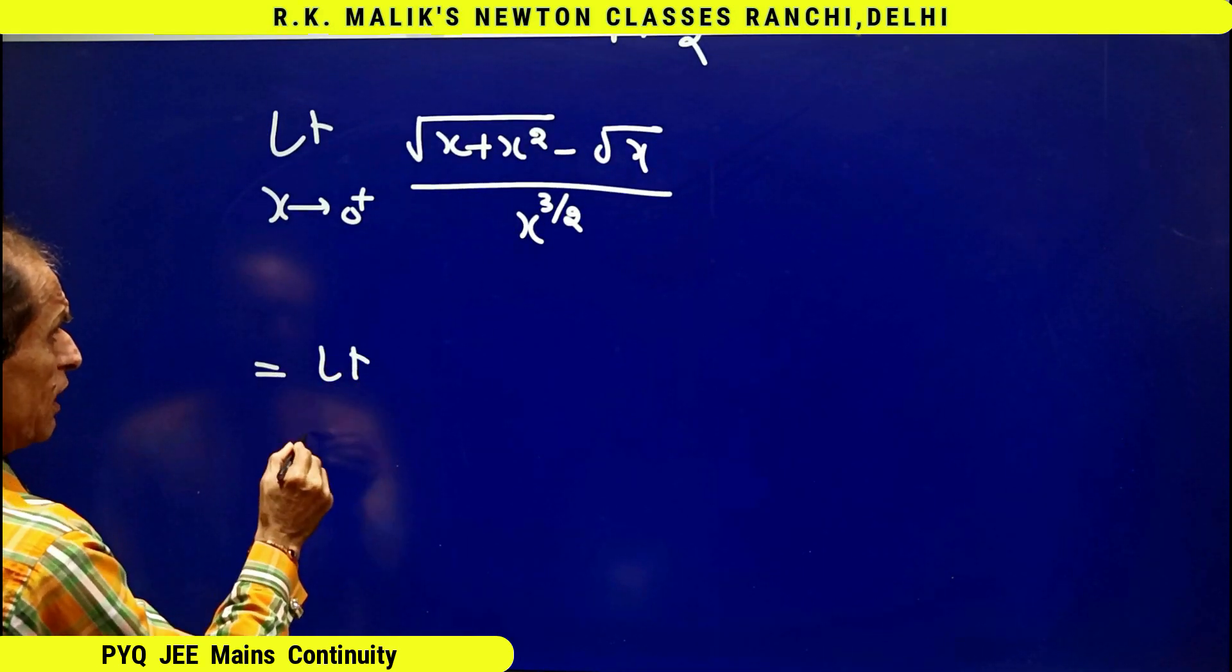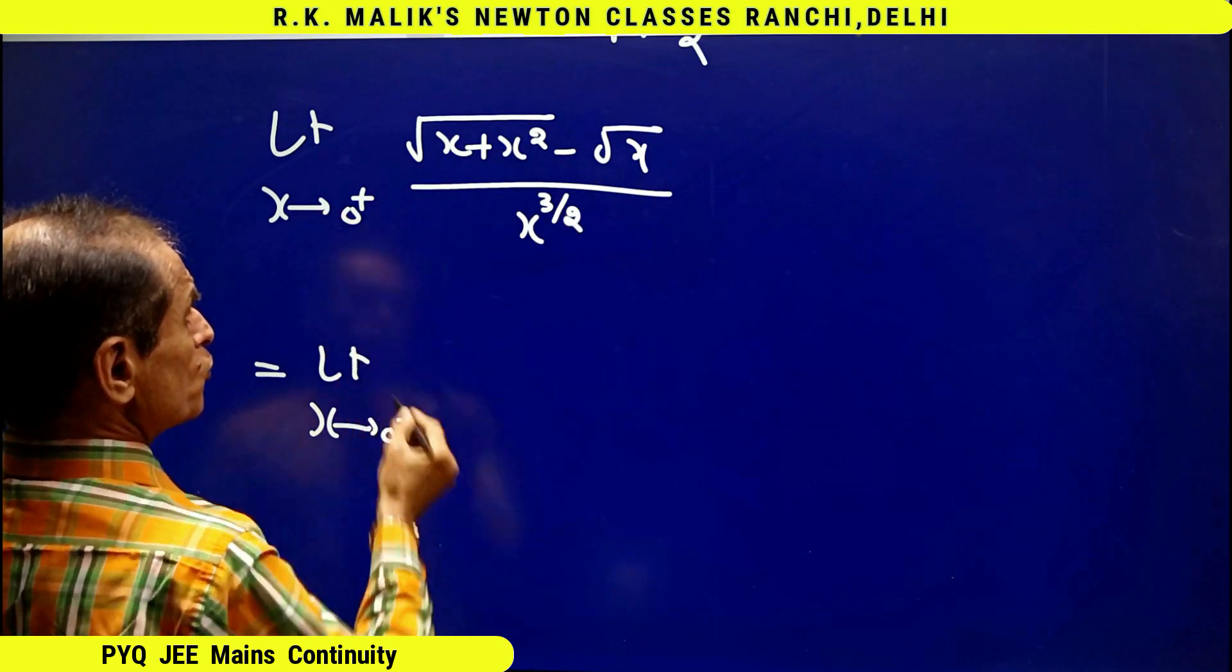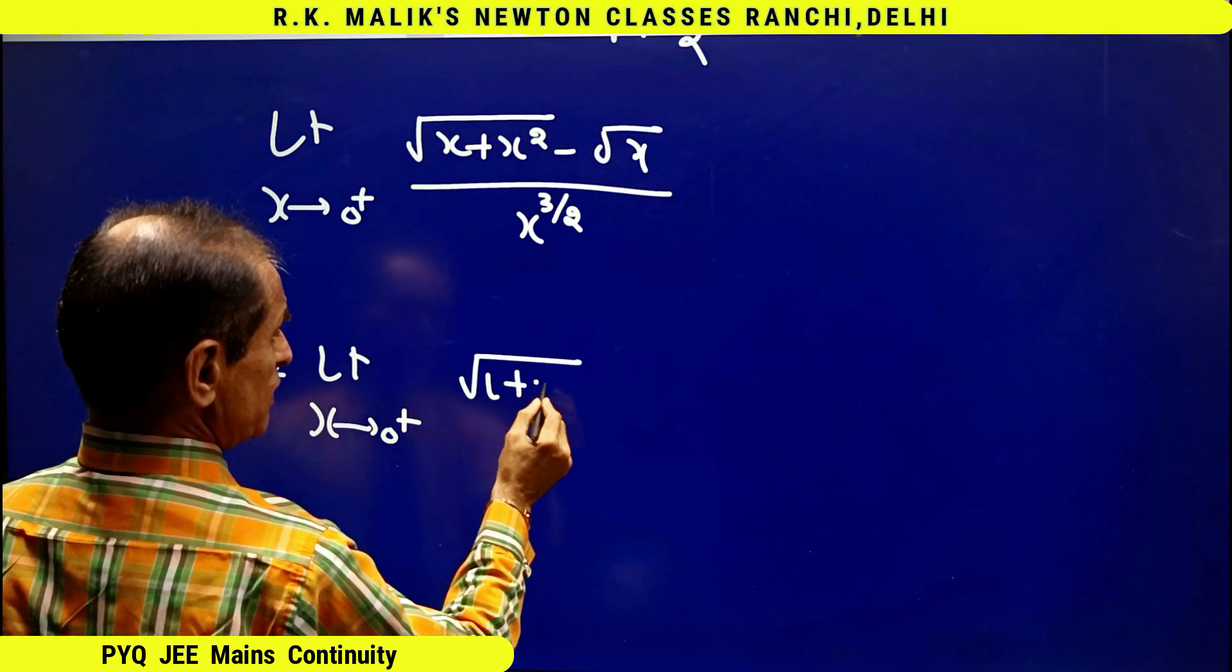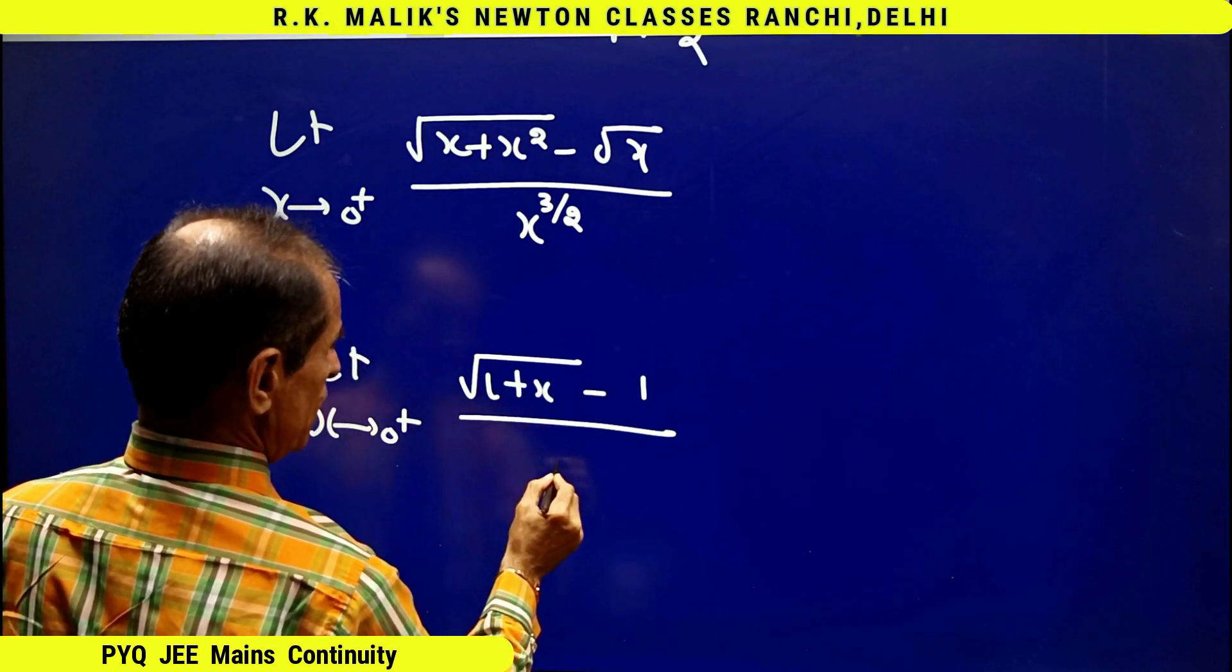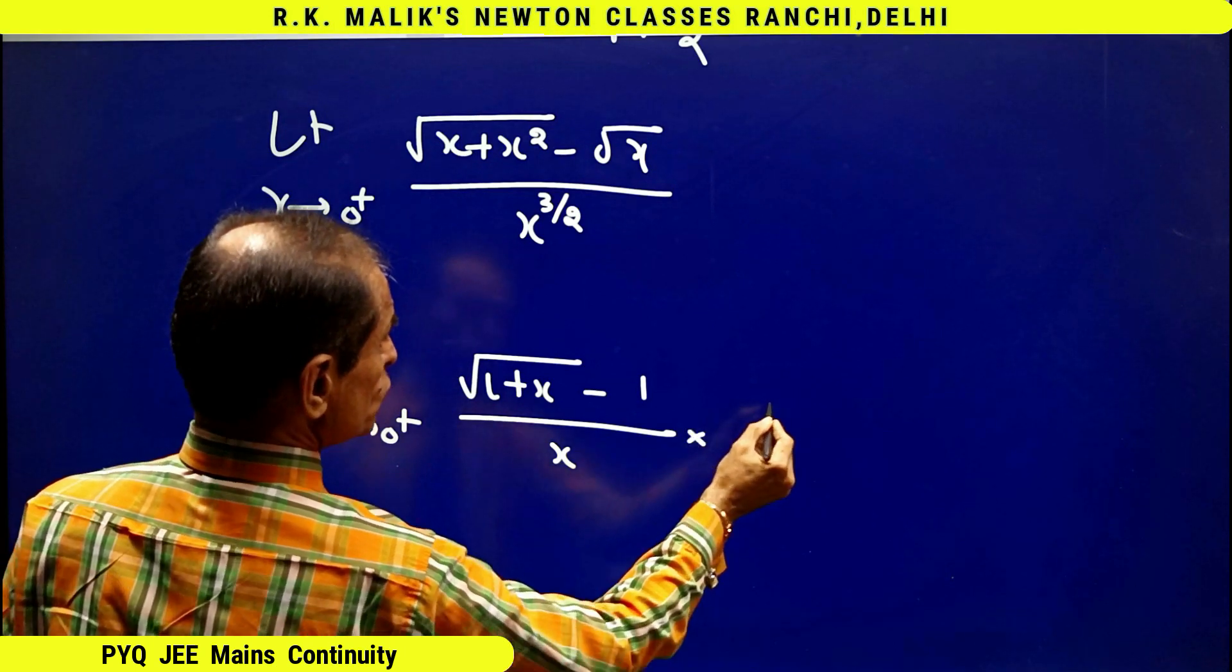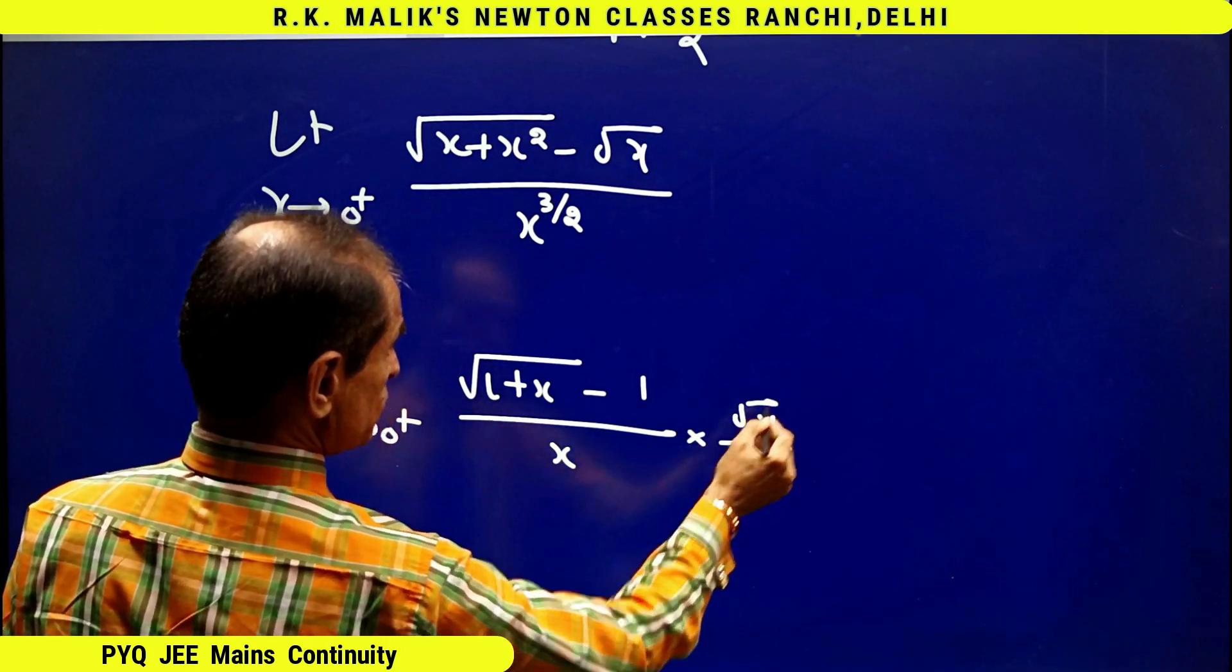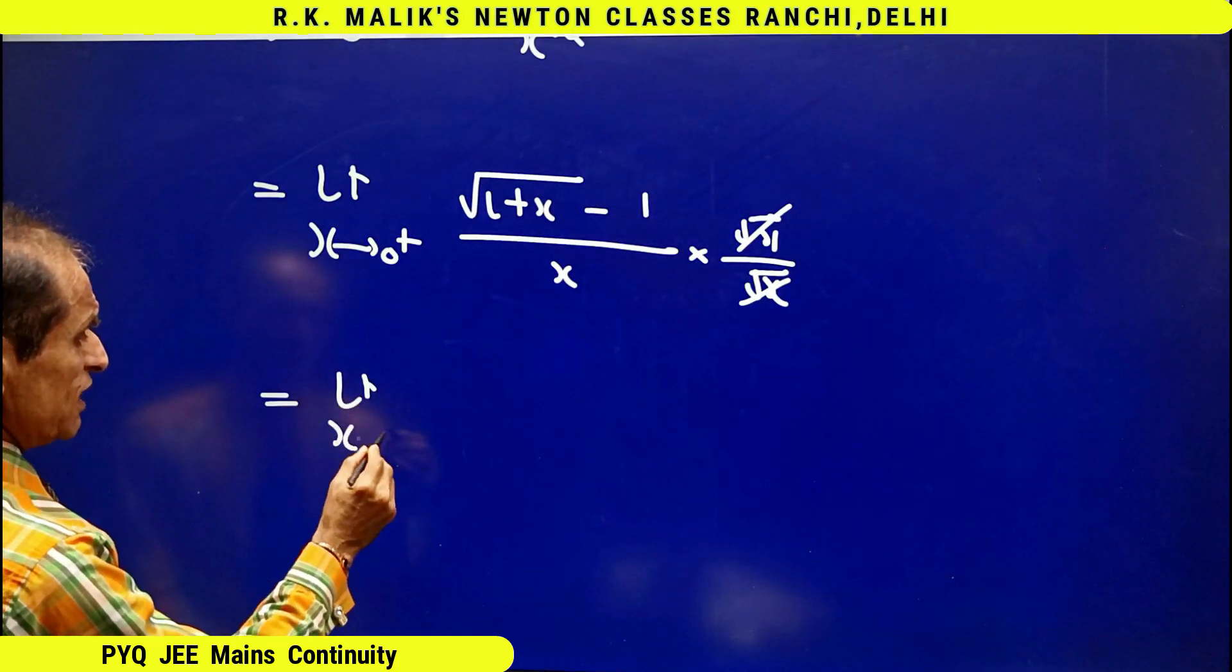Clearly this is equal to limit x tends to 0 plus, taking √x common, 1 + x - 1 upon x times √x, by √x. This will get cancelled. This is equal to limit x tends to 0 plus.